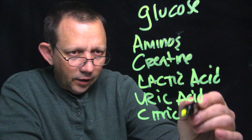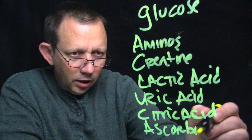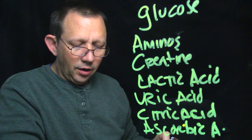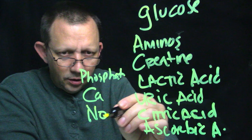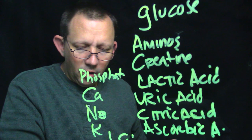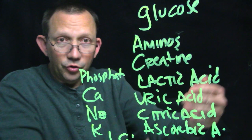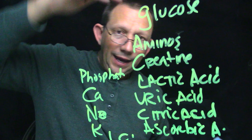Also reabsorbed: ascorbic acid — which is vitamin C — phosphates, calcium, sodium, potassium, and chloride. All of that is controlled by the proximal convoluted tubule and your descending and ascending loop of Henle sections. Two hormones are also involved here: vasopressin and aldosterone — we'll talk about those later.